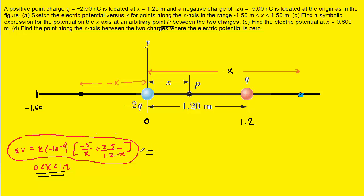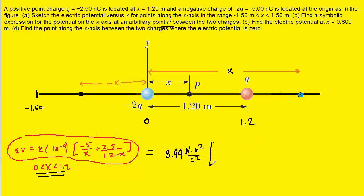We can clean it up a bit by plugging in K equals 8.99 times 10 to the ninth Newton times meters squared per Coulomb squared. Multiplying by 10 to the negative 9 cancels with the 10 to the positive 9 in K, leaving us with 8.99 multiplied by negative 5 over x plus 2.5 over 1.2 minus x, where the unit in brackets is charge divided by distance. This is the correct symbolic expression and the answer to part B.